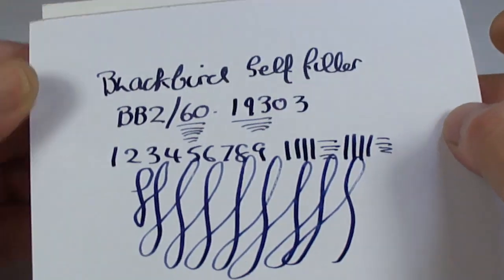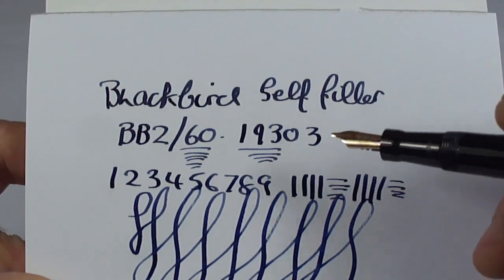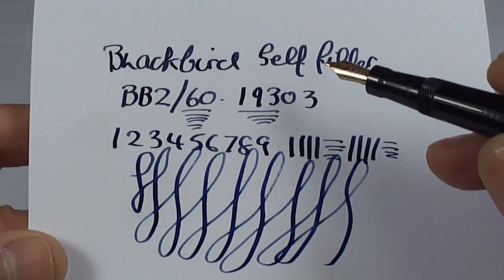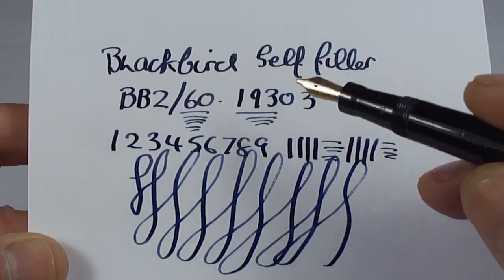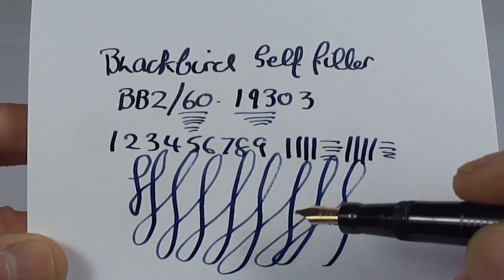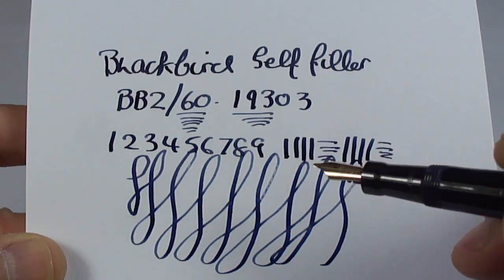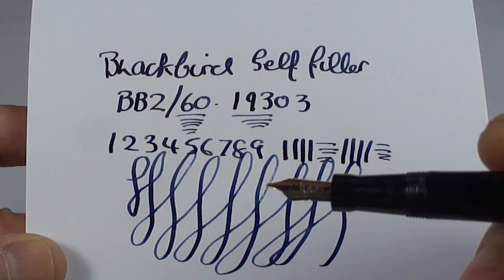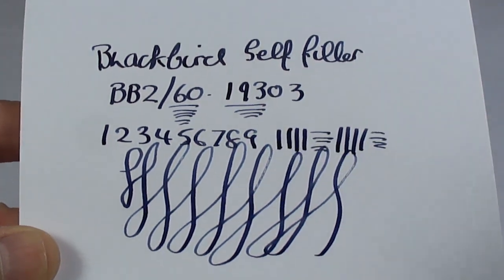And there we have it. So there you see, it's got a lovely variation in line. As we said, writing with a broad stub nib. Absolutely gorgeous. A lovely smooth writer. Lovely indeed.